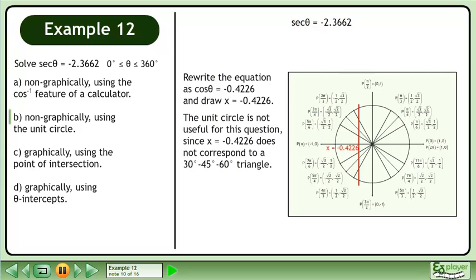The unit circle is not useful for this question since x equals negative 0.4226 does not correspond to a 30 degree, 45 degree, or 60 degree triangle.